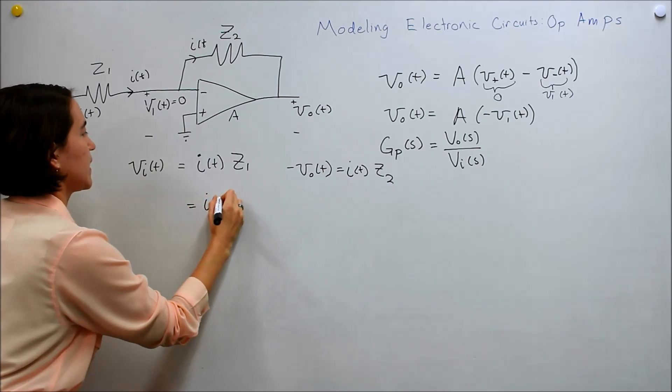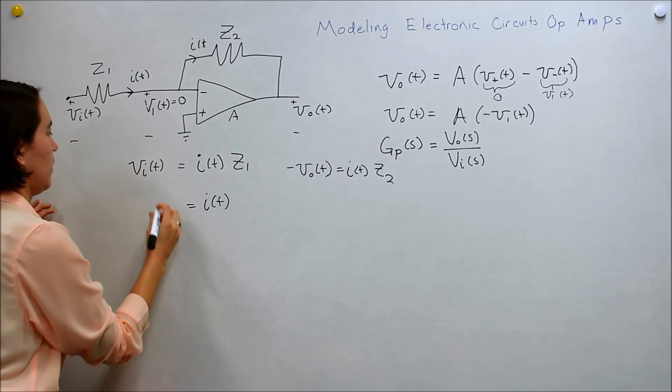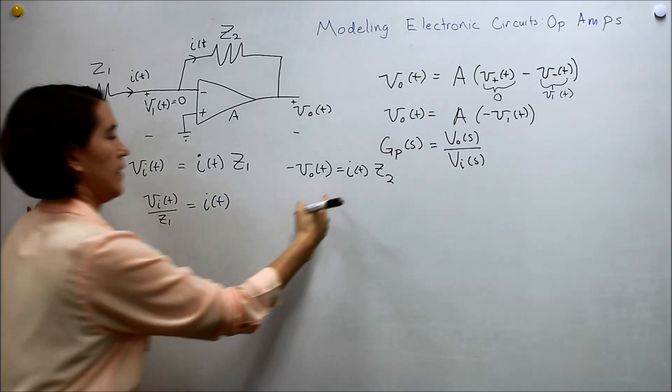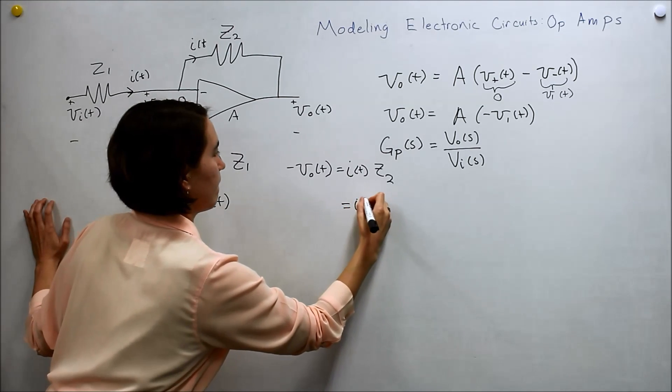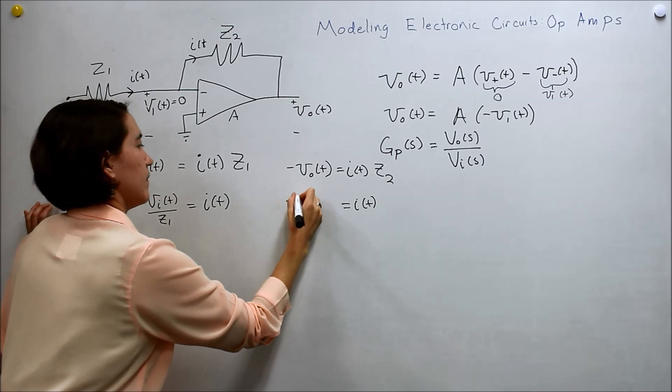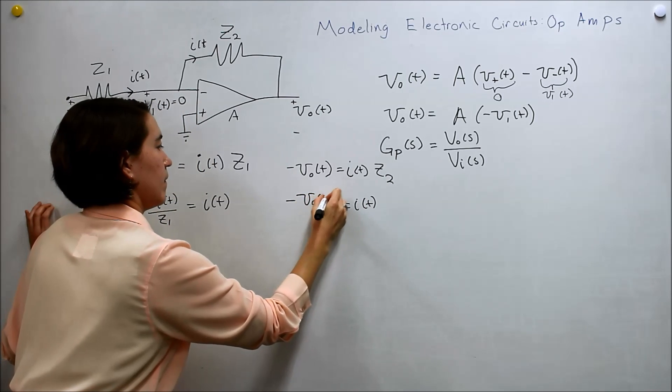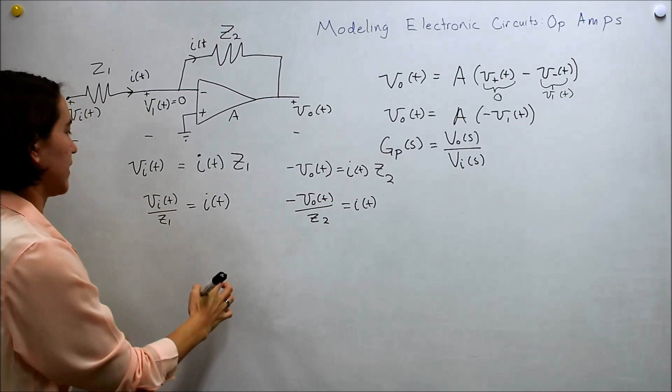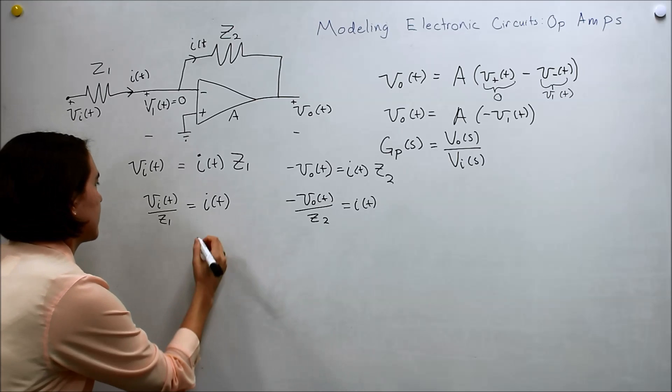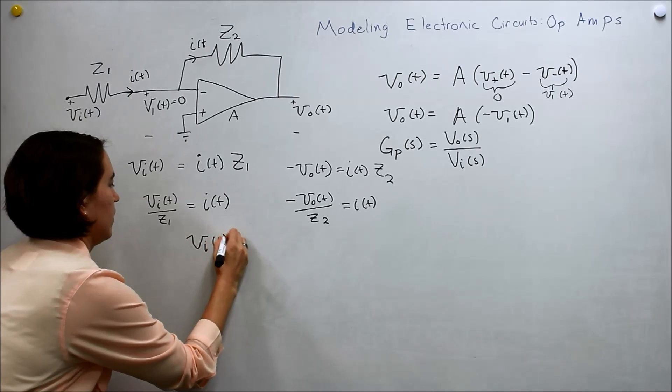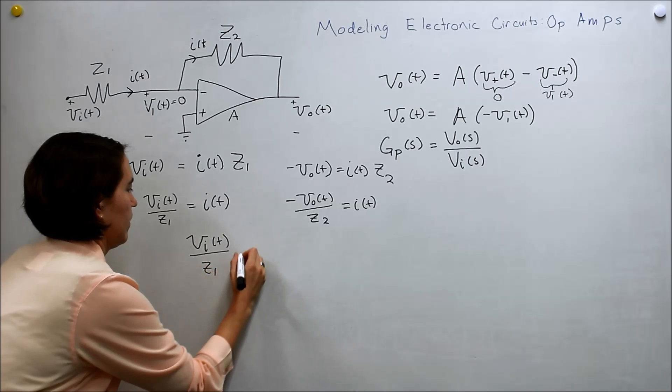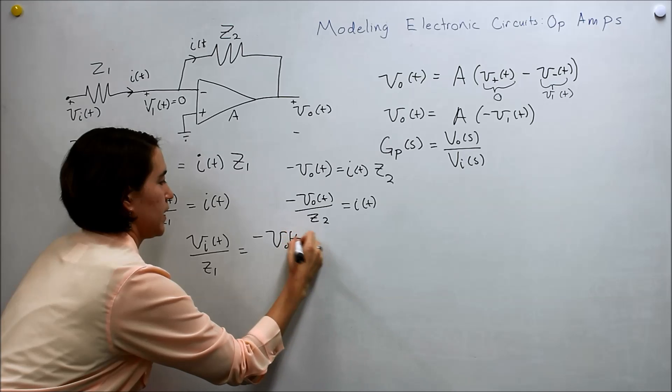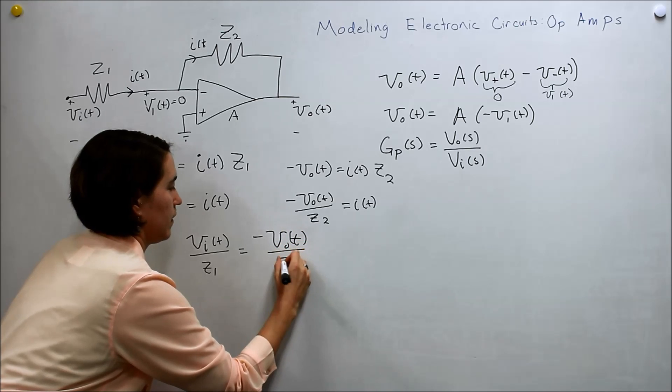So we'll just move some stuff around here. Move the Z over here. And the same thing here. Alright, and now we can equate these two together. So let's do that.